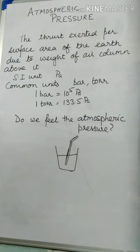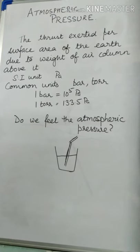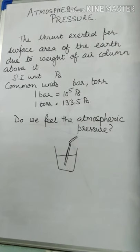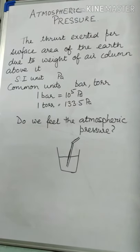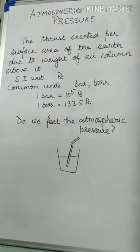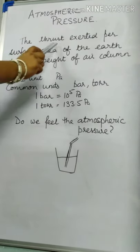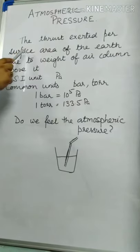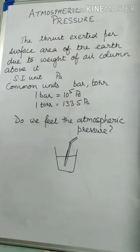We all know that the Earth is surrounded by a blanket of air which is known as the atmosphere. This atmosphere is comprising of air, and air has weight. Since it has weight, it will be exerting a thrust, and that thrust on a unit area gives us the pressure. So we say that the atmosphere exerts pressure, which is known as atmospheric pressure. We can define it as the thrust exerted per unit surface area of the Earth due to the weight of the air column above it.